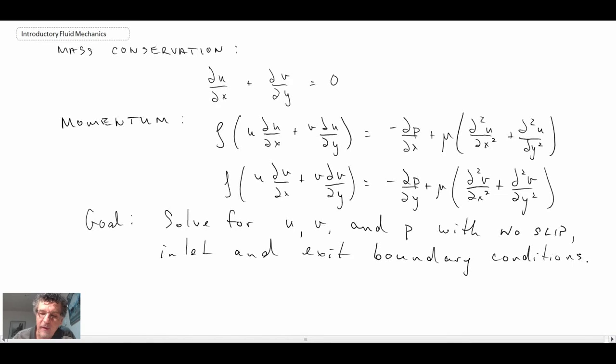Now in order to do this properly, we should be non-dimensionalizing all of the different values within the equation and then doing an order of magnitude analysis that way. I'm going to skip that and do a bit of a shortcut here. The first assumption is that the velocity normal to the wall is much less than the velocity along the wall.